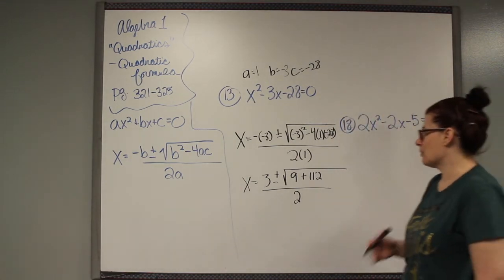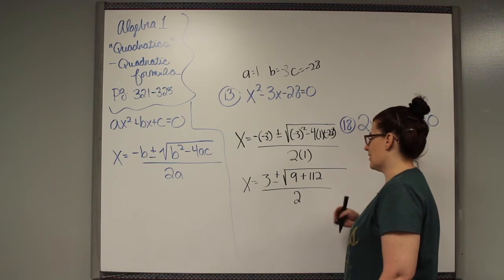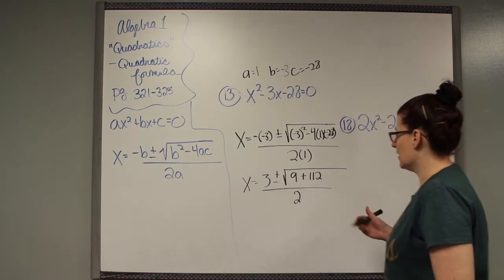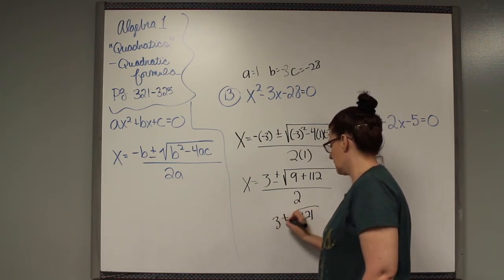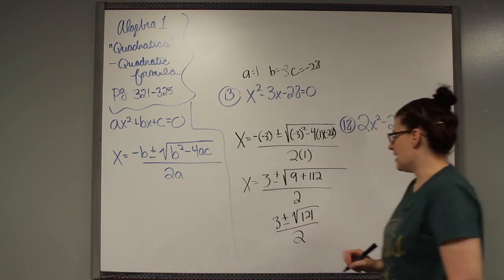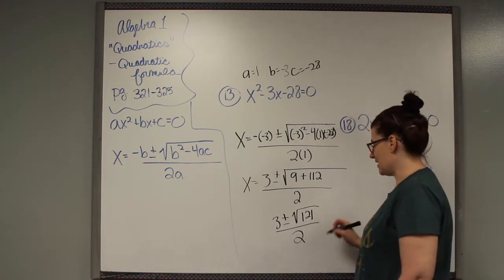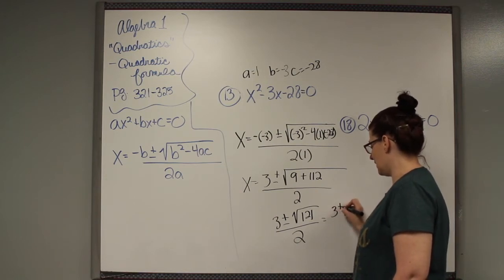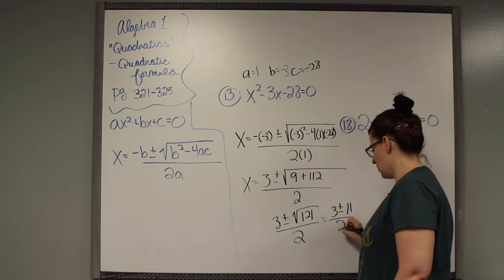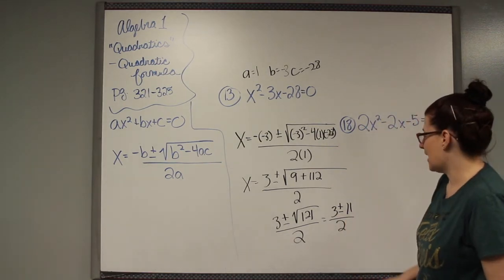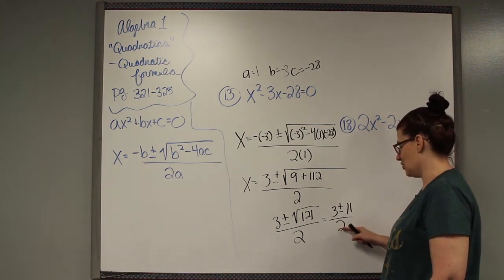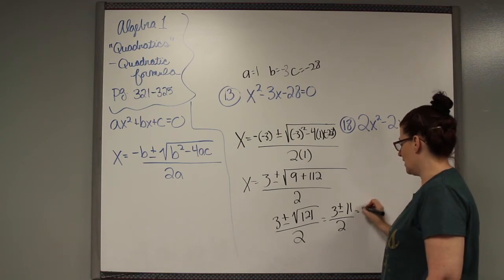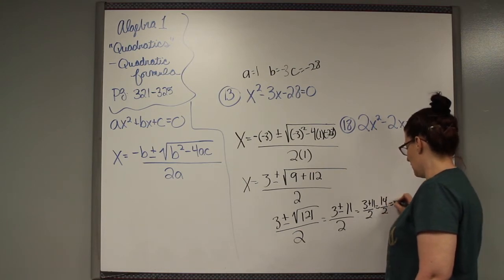So 4 times 28 is 112 and then that's all over 2 times 1 which is 2. Now it's getting a little bit more workable. So I need to work this radical out, order of operations. So 9 plus 112 I believe is 121 and then the square root of 121 is 11. So this would be 3 plus or minus 11 over 2. Now I need to work both of those problems out. I need to do 3 plus 11 which is 14 and then divide it by 2 which would be 7.